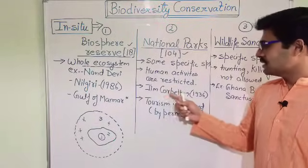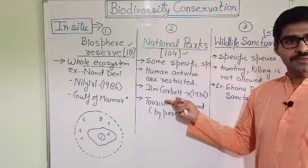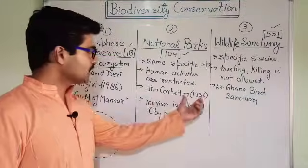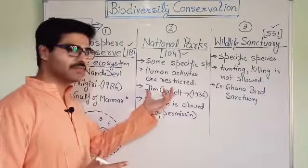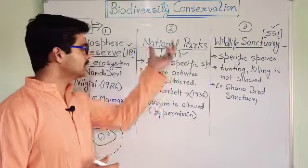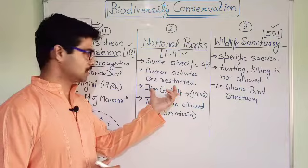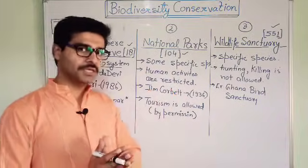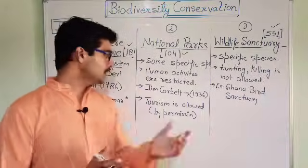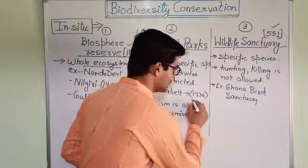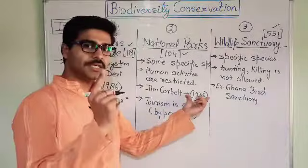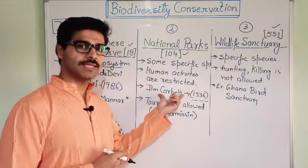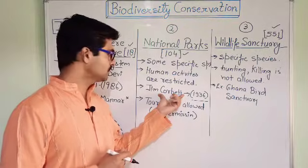An example of a national park is Jim Corbett National Park, which is in Uttarakhand. Jim Corbett National Park was the first national park in India, established in 1936. At that time the name was not Jim Corbett Park but was Hailey National Park.